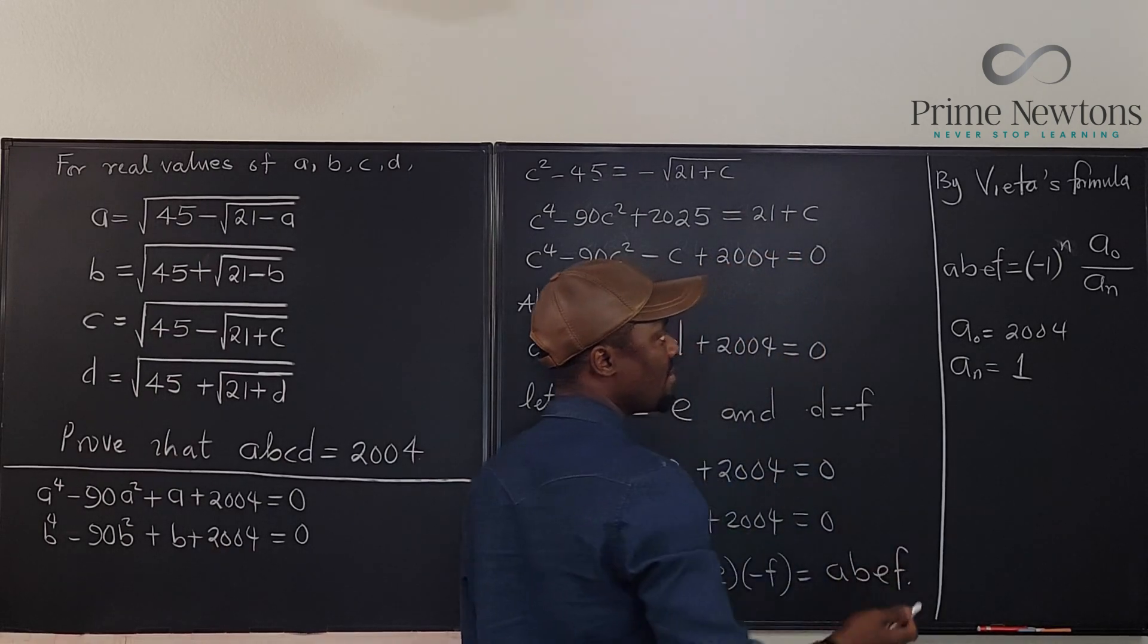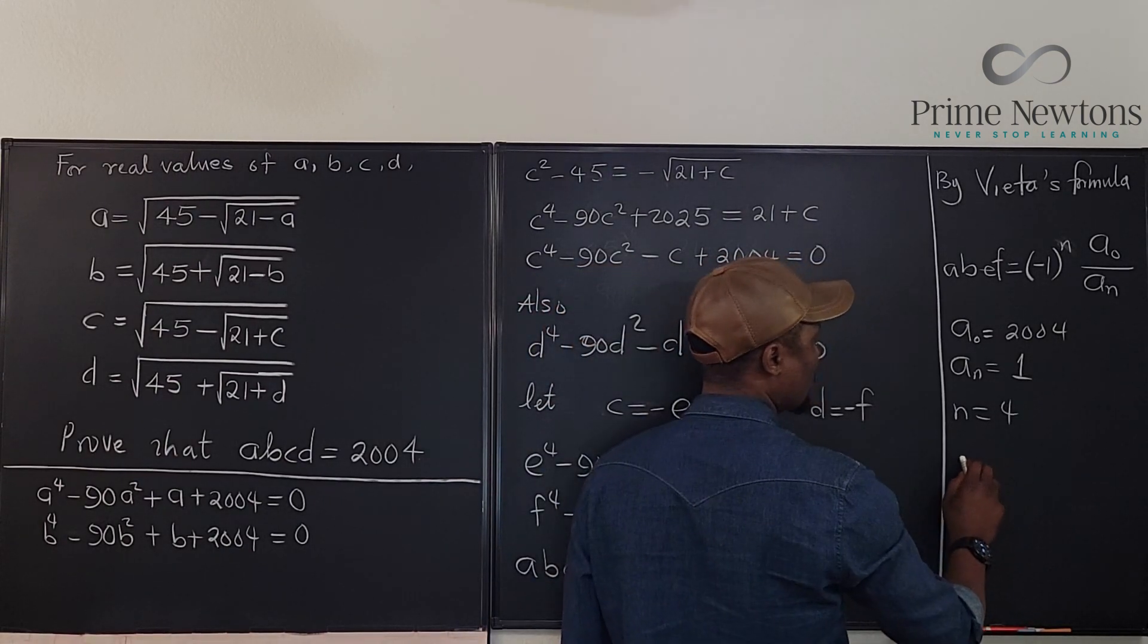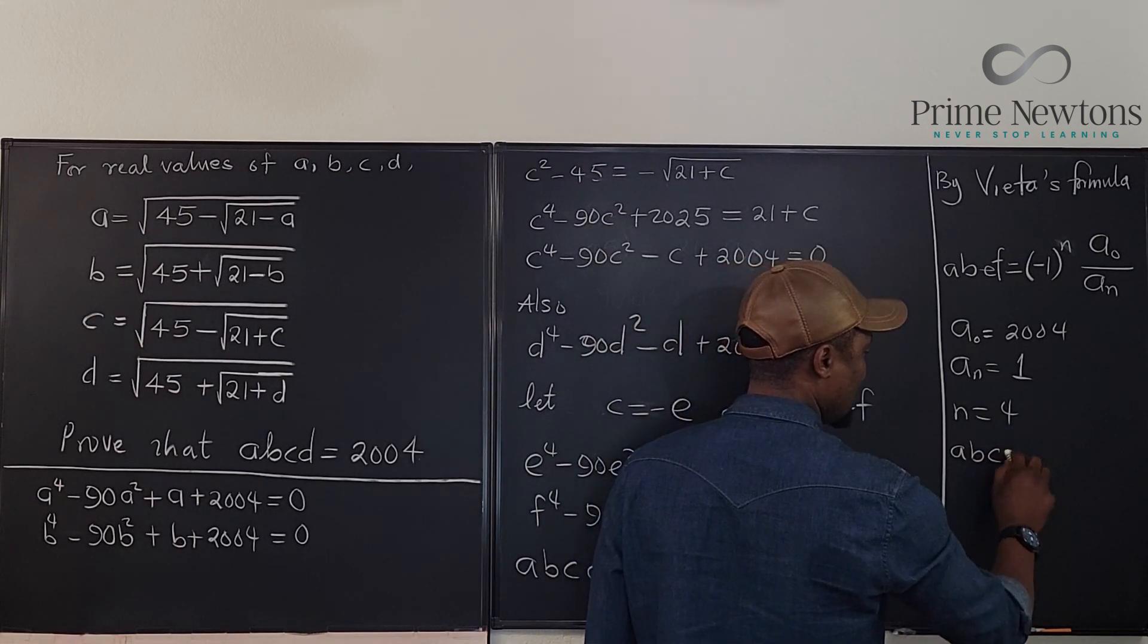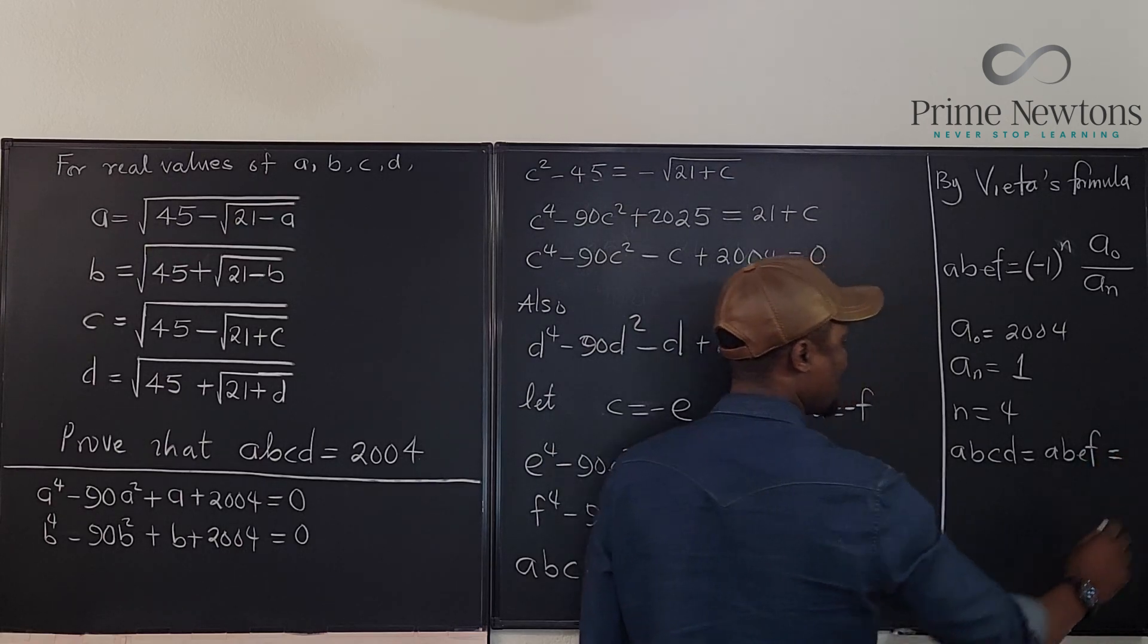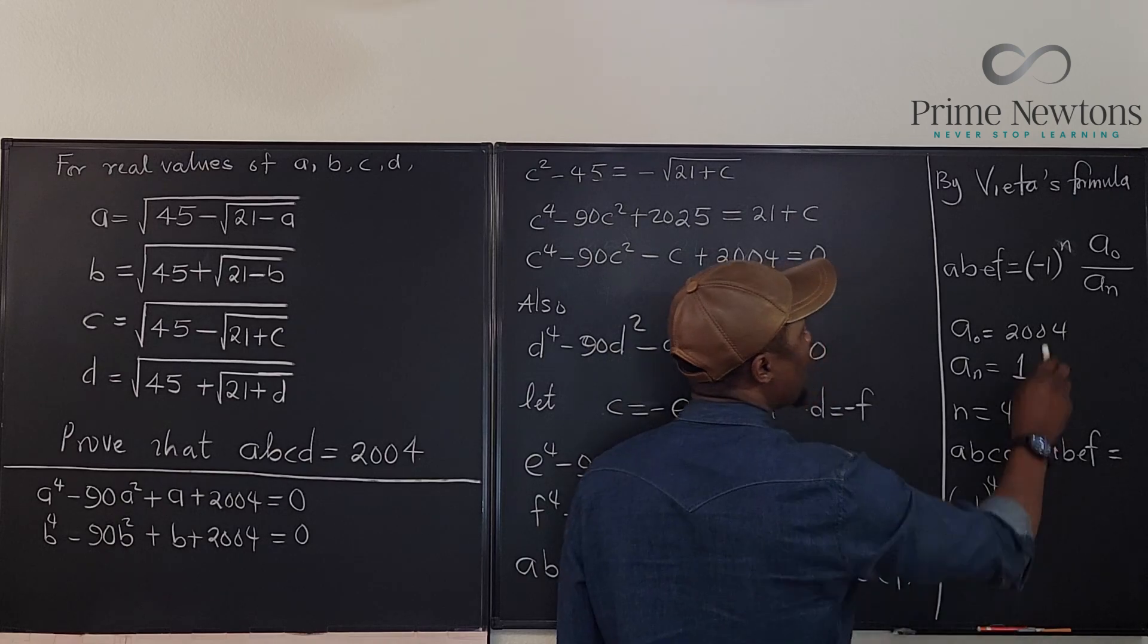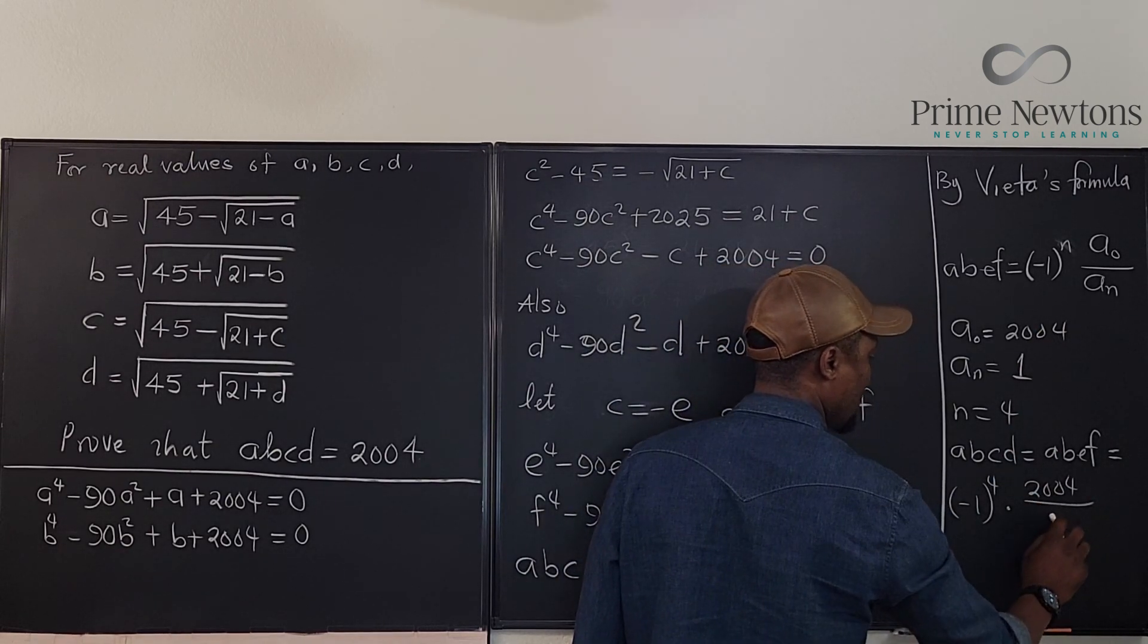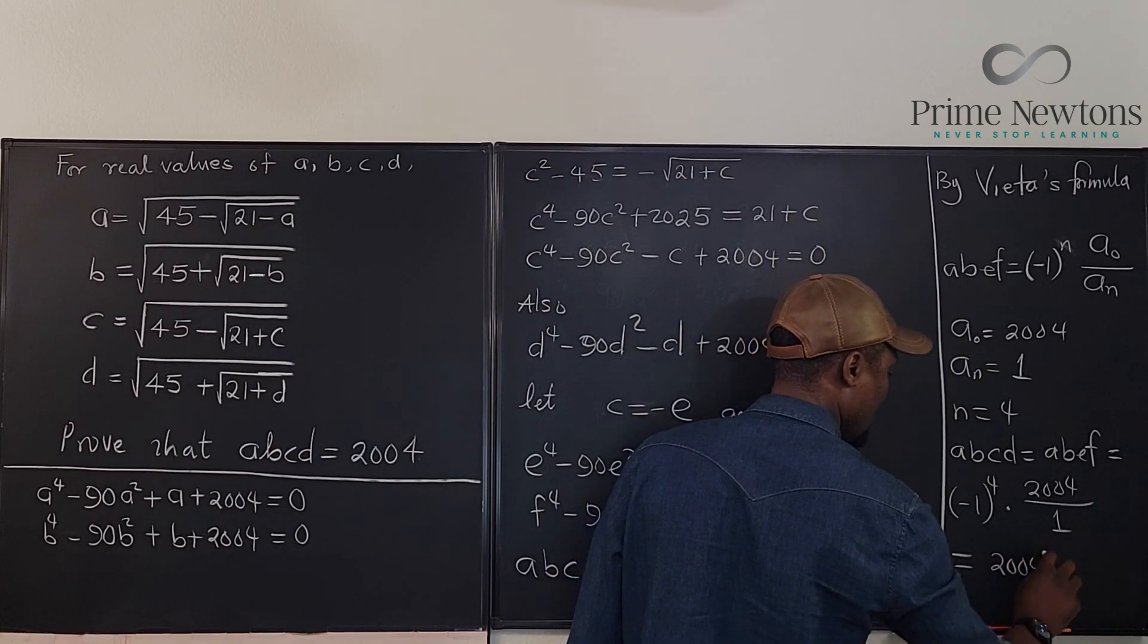And we have... What's the other thing? Our n is equal to 4. So we know that this product, A, B, C, D equals A, B, E, F, which is equal to negative 1 raised to the power of 4 times 2004 over 1, which is equal to 2004.